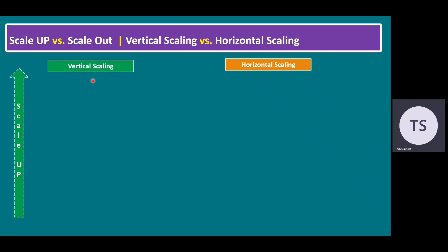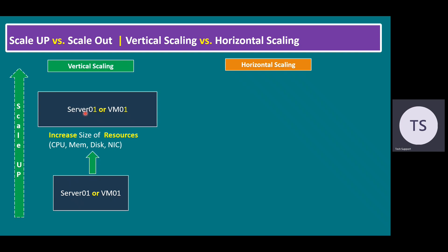Let me explain vertical scaling first. Within vertical scaling, let's say I have Server 1 or Virtual Machine 1 running with 2 CPUs, memory of 4 GB, and disk of 100 GB, running with one production NIC card. If you have vertical scaling, that means we increase to 4 virtual CPUs, memory from 4 GB to 16 GB, hard disk from 100 GB to 200 GB, and we add an additional NIC card. When we add any additional resources on the same server, that is vertical scaling — increased size of resources: CPU, memory, disk, and NIC (network interface card).